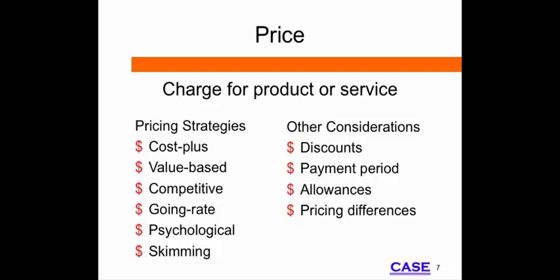Skimming involves the introduction of a product at a high price for affluent consumers. Later, the price decreases as the market becomes saturated. Psychological pricing is based on a price that looks better — for example, $4.99 per pound instead of $5 per pound.